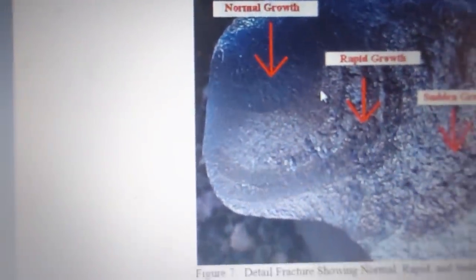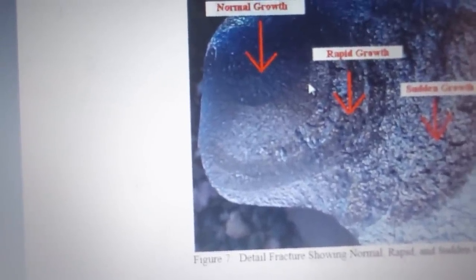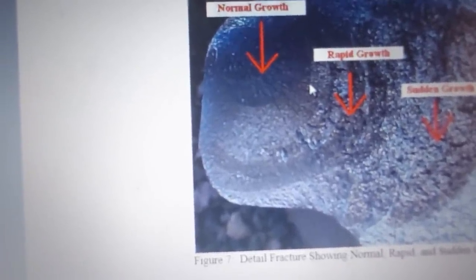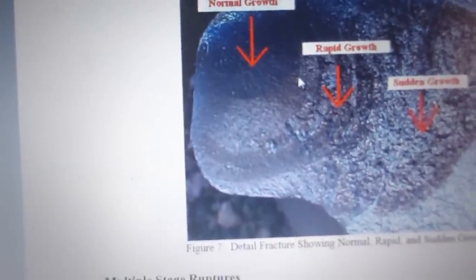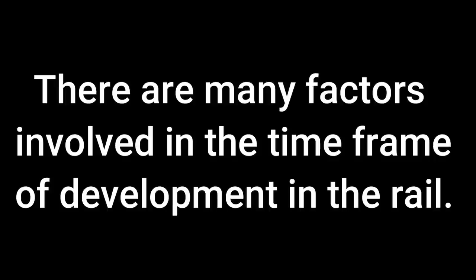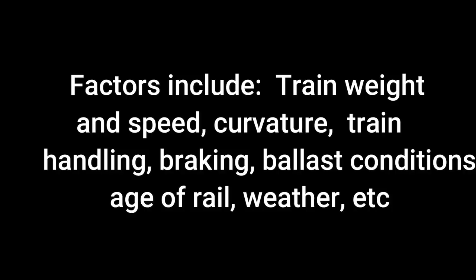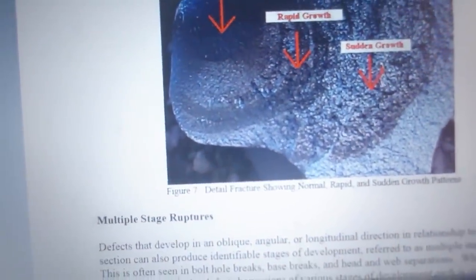This shows normal growth. Once these get to a certain size it seems like they grow faster — just like a cancer. It takes a long time to grow to a certain size, but once it gets there, that would be what they call sudden growth.